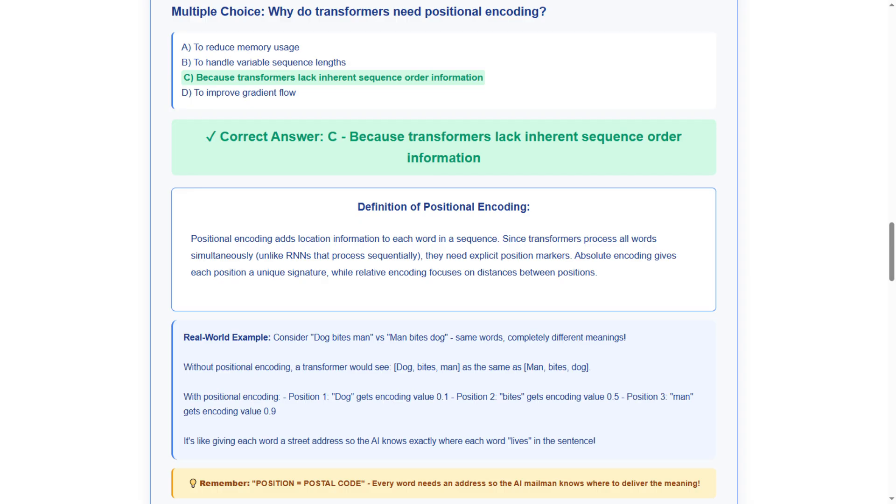The correct answer is C, because transformers lack inherent sequence order information. We chose this because unlike RNNs that process words sequentially, transformers process all words simultaneously, so they need explicit position markers to understand word order.